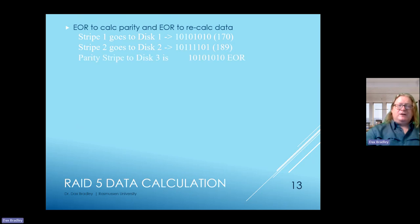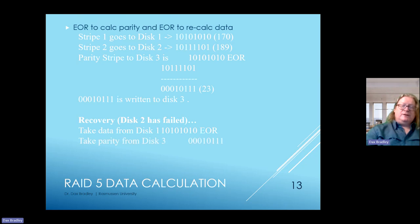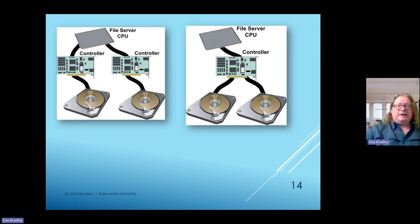In RAID 5 data calculation, XOR is used to calculate parity and recalculate lost data. Stripe 1 goes to disk 1 with binary code 170; stripe 2 goes to disk 2 with binary code 189. The parity stripe to disk 3 is 10101010 XOR 10111101, which adds up to 23, and that data is written to disk 3. If disk 2 fails, data from disk 1 combines with parity from disk 3 to recover it.